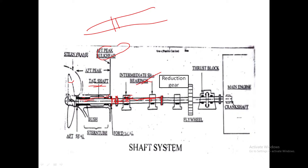The intermediate shaft bearings serve three functions: first, to support the intermediate shaft; second, to lubricate the intermediate shaft; and third, to absorb the thrust coming from the tail shaft and send that thrust back to the hull of the ship. After the intermediate shaft we have the reduction gear, then the flywheel, and then the thrust block. The shaft connecting the thrust block to the crankshaft is also called the thrust shaft. These are the parts connected from the propeller to the main engine.